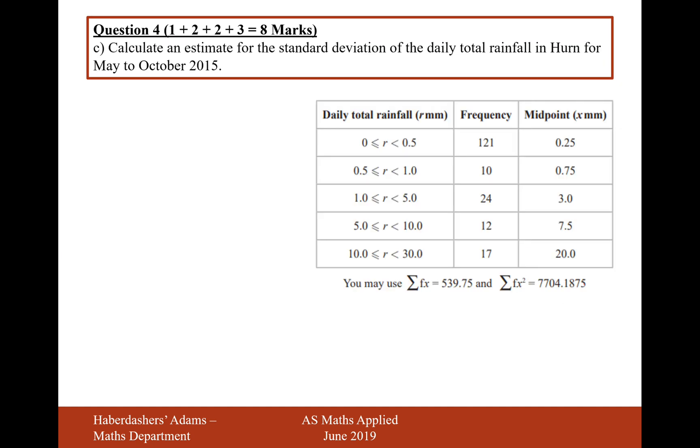Let's move on to part C. Calculate an estimate for the standard deviation of the daily total rainfall in Herne from May to October 2015. So the first thing we need to do here is remember what our n value was. That's the number of pieces of data we have, that's 184. And then recall the formula for the standard deviation. Now luckily we've got the sum of fx and the sum of fx squared down below there, so that's nice and helpful. So it's going to be the big calculation of the sum of fx squared over n minus the mean, which is the sum of fx over n squared. So let's go and substitute those values in.